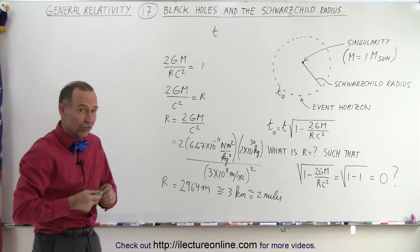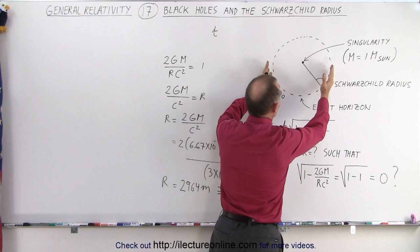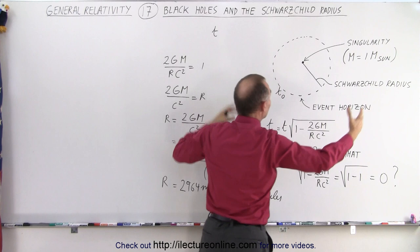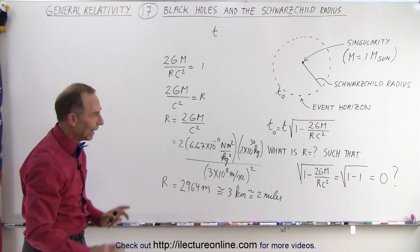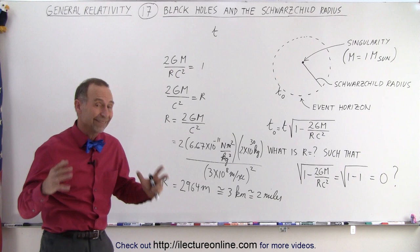So now we realize that if there were such thing as black holes, depending upon how much mass was at the center, the Schwarzschild radius would grow and the event horizon would go further and further out. So that's why if you have a black hole that contains a million solar masses, then the radius would be a million times this, 3 million kilometers or about 2 million miles. And that's where the concept came from.